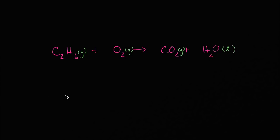Now we have another combustion reaction. Instead of ethylene, we now have ethane, C2H6, which has two carbons and six hydrogen atoms in each molecule. It is ethane gas reacting with molecular oxygen in gaseous form, and they combust to form carbon dioxide gas and liquid water.